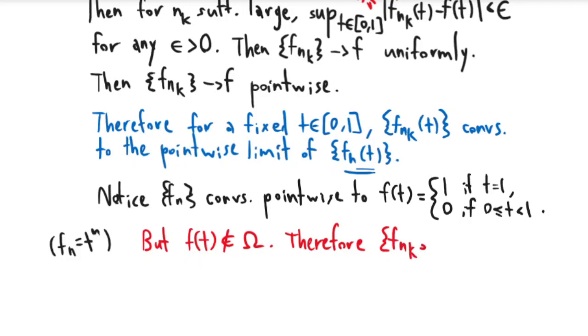So this is not in Ω. Therefore we actually proved something stronger, which is that f_{n_k} has no limit in Ω. And we really just wanted to show that it has no limit in B.